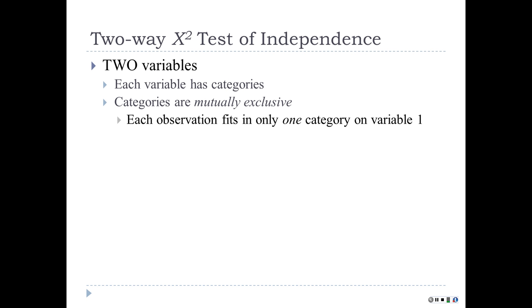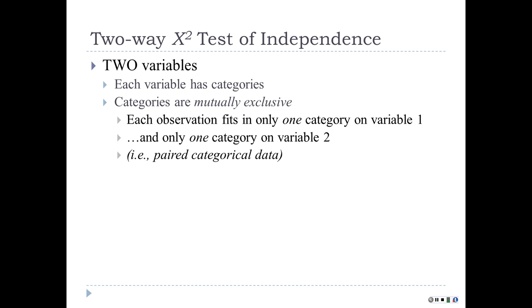Just like the One-Way Chi-Square, the categories need to be mutually exclusive. Since there are two variables, two sets of categories, each observation will have a value for variable one and a value for variable two. Each observation has to fit in exactly one category on variable one and exactly one category on variable two.